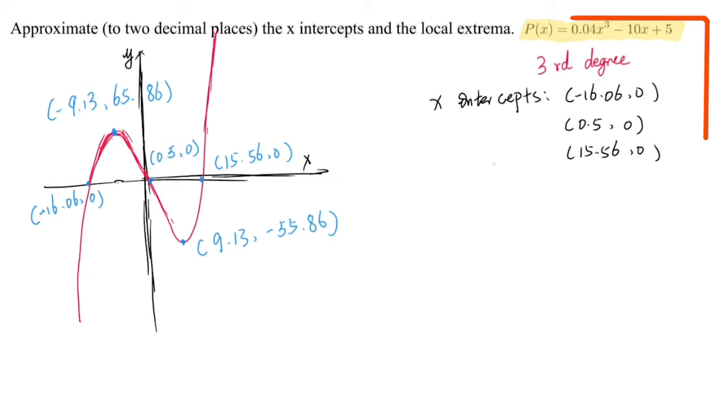And for local extrema, there are two. First one is (-9.13, 65.86). Second one is (9.13, -55.86). They have the same, very similar x-coordinates.